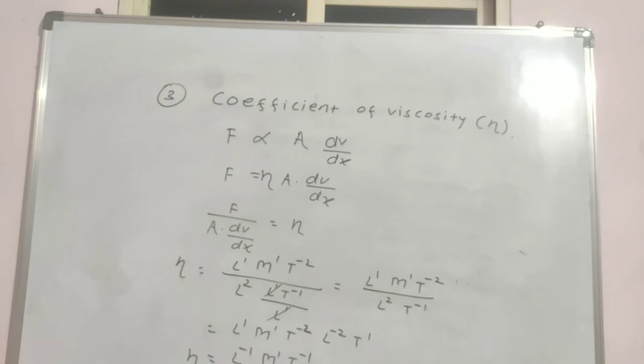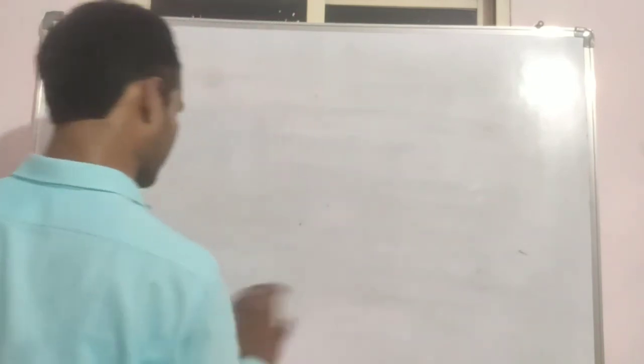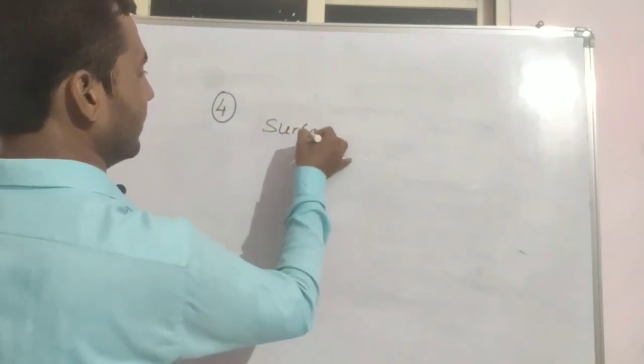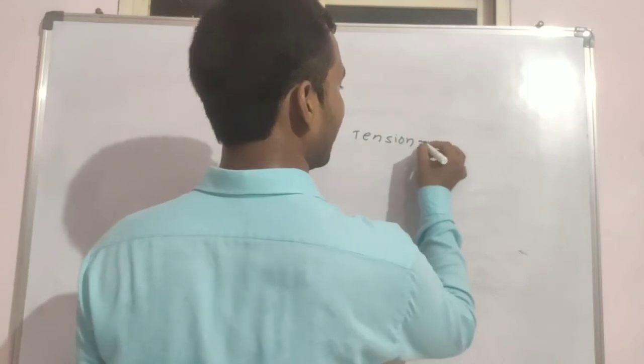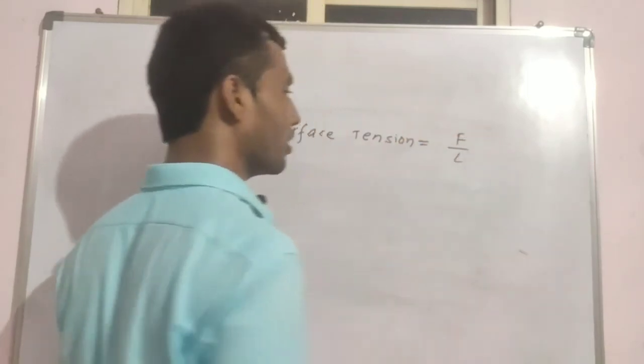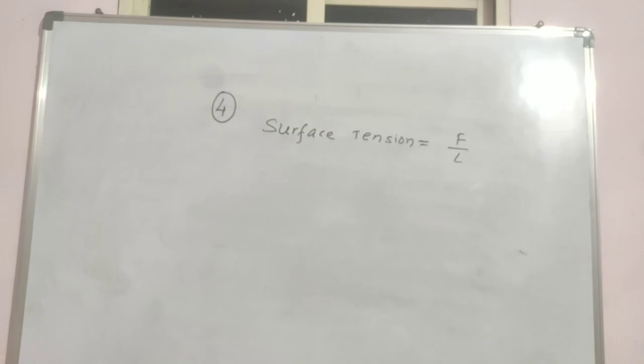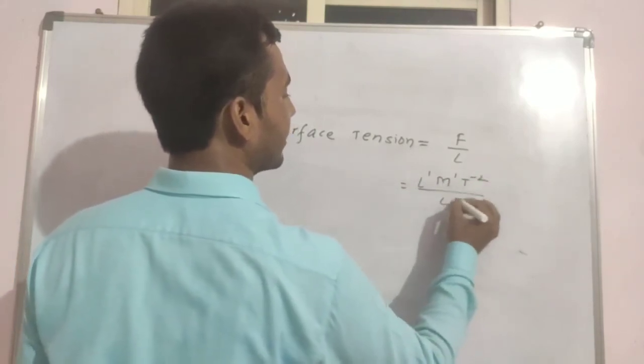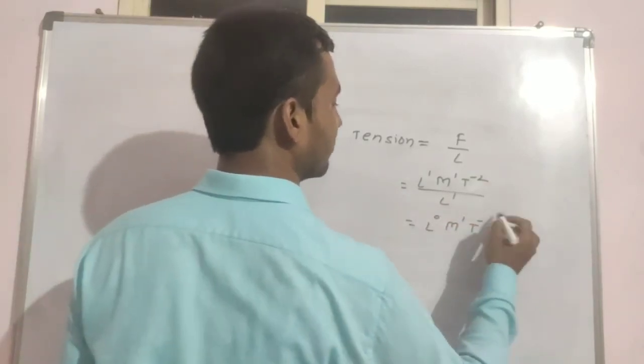This is the dimension of surface tension. To find the dimension we have to know the formula. The formula must be known to you: force by length. There is no other way, without formula you cannot find dimension. So first condition to find dimension is to know the formula. So F by L. What is the dimension of force? That is l1 m1 t minus 2, and for length that is l1. So it will be l0 m1 t minus 2. So l0 m1 t minus 2, this is the dimension of surface tension.